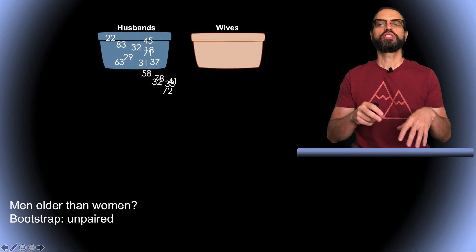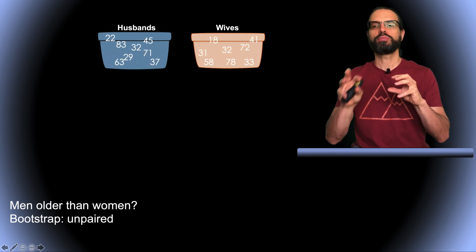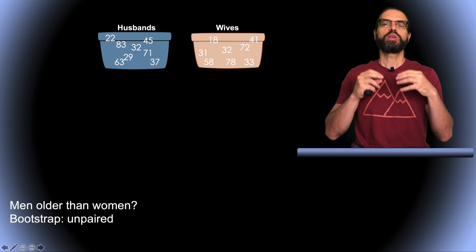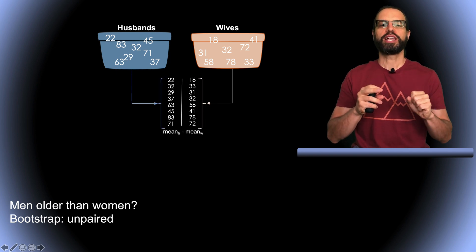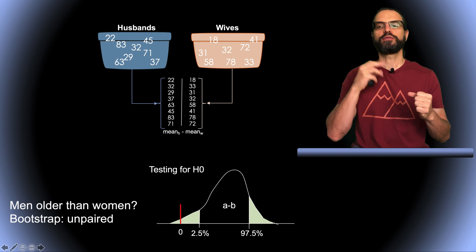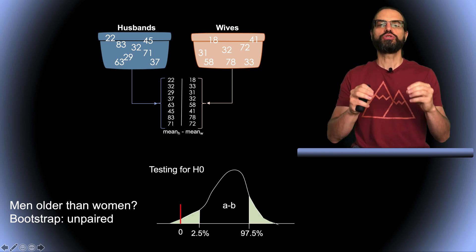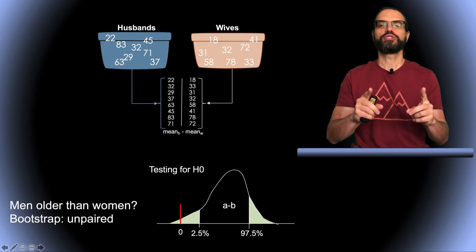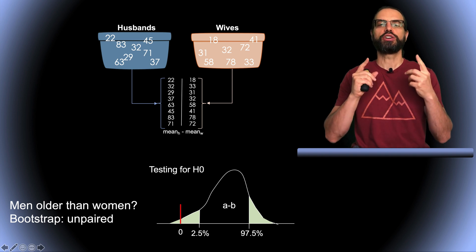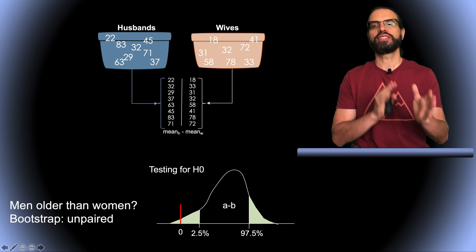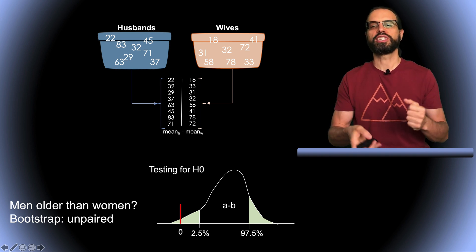To do bootstrap, we're just going to have one bucket for men and one bucket for women. Then we bootstrap the bucket for men and we bootstrap age for men, and we do the same for women. We subtract the two mean ages and we build our difference distribution. As in the paired case, if zero lies in the tail, we can conclude that the two groups are significantly different.